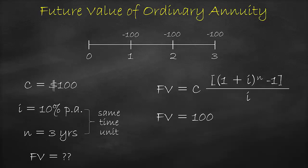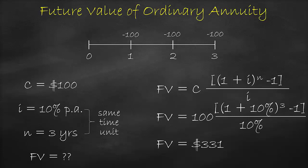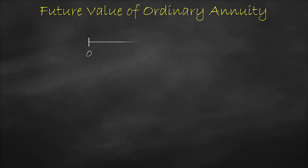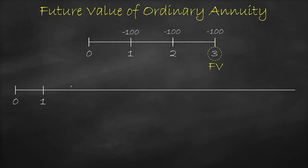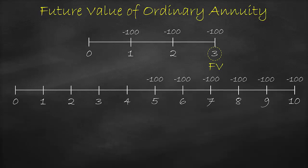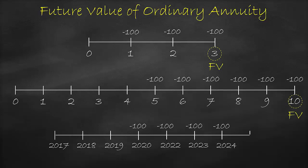Therefore, our future value at the end of three years will be $100 multiplied by the formula. Please note that the future value of the ordinary annuity is always at the last cash flow. For example, if my last equivalent cash flow is in three years, the future value will be in year three. Or if my last equivalent cash flow is in year 10, the future value will be in year 10. Or if my last equivalent cash flow is in year 2025, the future value will be at year 2025.